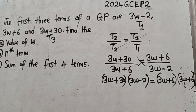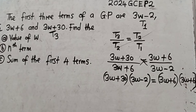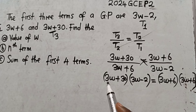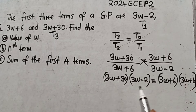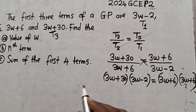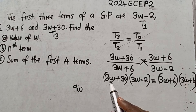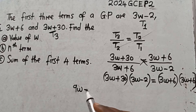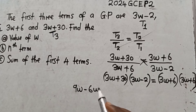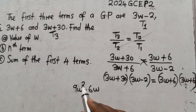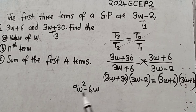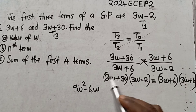After cross-multiplying, we expand. We multiply 3w into the bracket: 3w times 3w gives 9w squared, and 3w times negative 2 gives minus 6w. So we have 9w squared minus 6w from this part of the expansion.